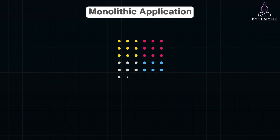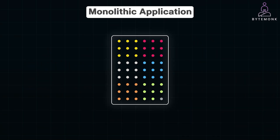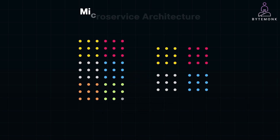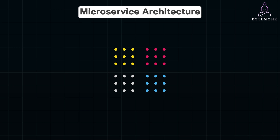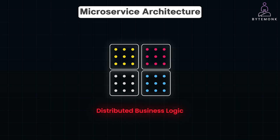In a monolithic application, all your code including the business logic is in one place, making it easier to manage relationships between different parts of the system. However, when you move to microservices architecture, things get tricky because your application is divided into multiple smaller services. Each service handles a specific piece of functionality. While this approach has its advantages, it also introduces challenges, especially when your business logic needs to operate across multiple services.